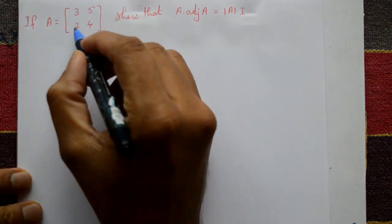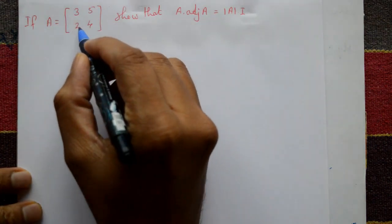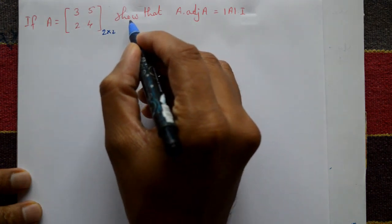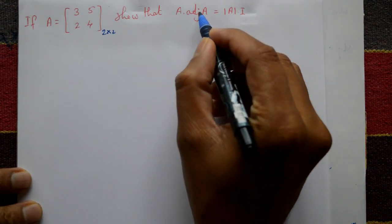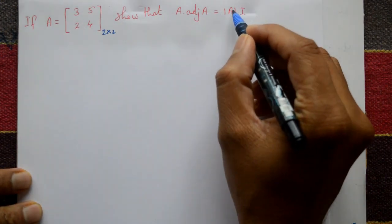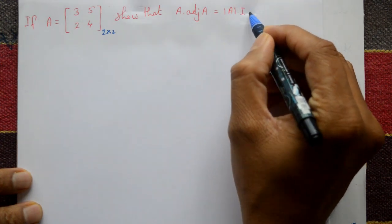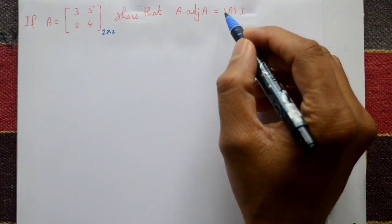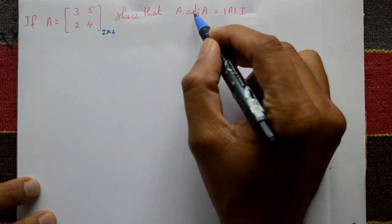If matrix A is given 3 5 2 4, 2×2, show that A into adjoint of A is equal to determinant A into I. I means unit matrix. Now multiply A into adjoint of A, then you get determinant A into unit matrix. Let us see.